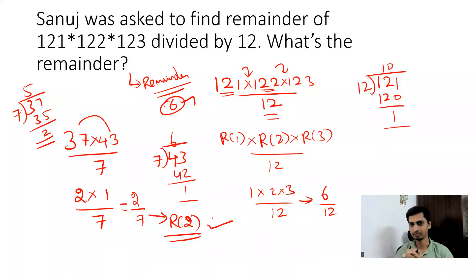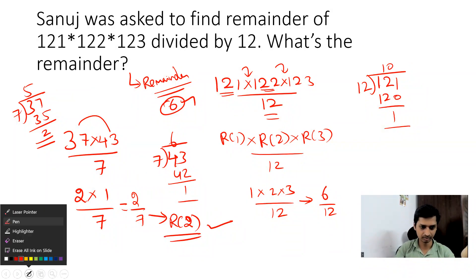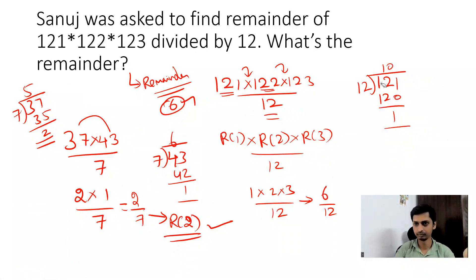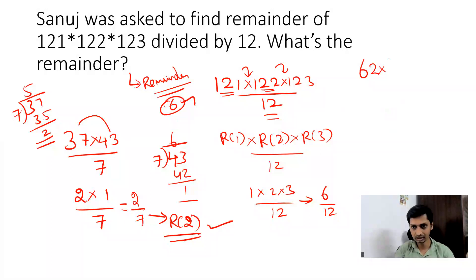This technique works when the numerator numbers are greater than the denominator. But what if the numerator numbers are less than the denominator? In that case, we need to use the concept of negative remainder. Let me erase these steps and show a new example.